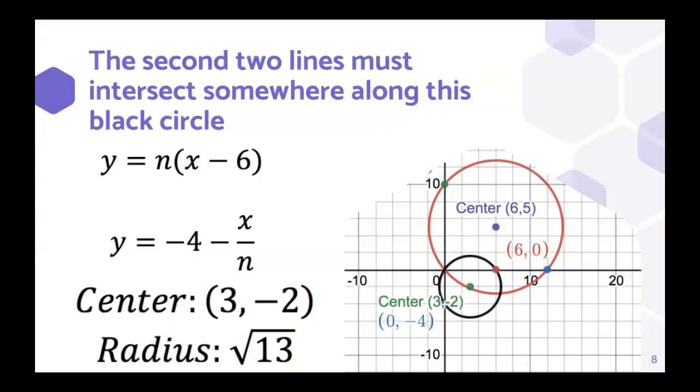With a similar strategy, the second two lines must intersect somewhere along this black circle, where we have a center at (3, negative 2), and the radius is square root of 13.